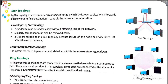Next is Star Topology. In star topology, each computer is connected to the switch by its own cable. The switch forwards data towards the final destination and controls the network communication. In star topology there is a switch — suppose we have 100 computers all connected to each other through a switch. If we want to disconnect a computer, we can do it with the help of the switch.